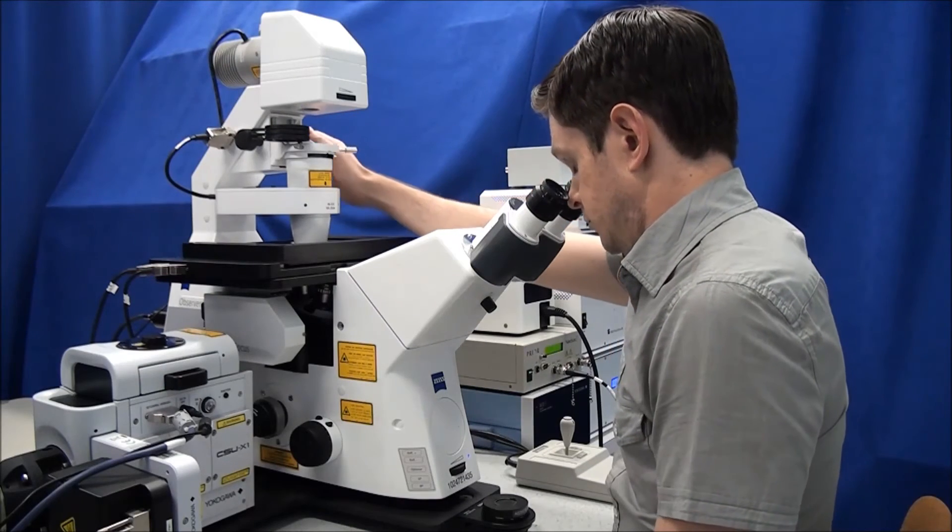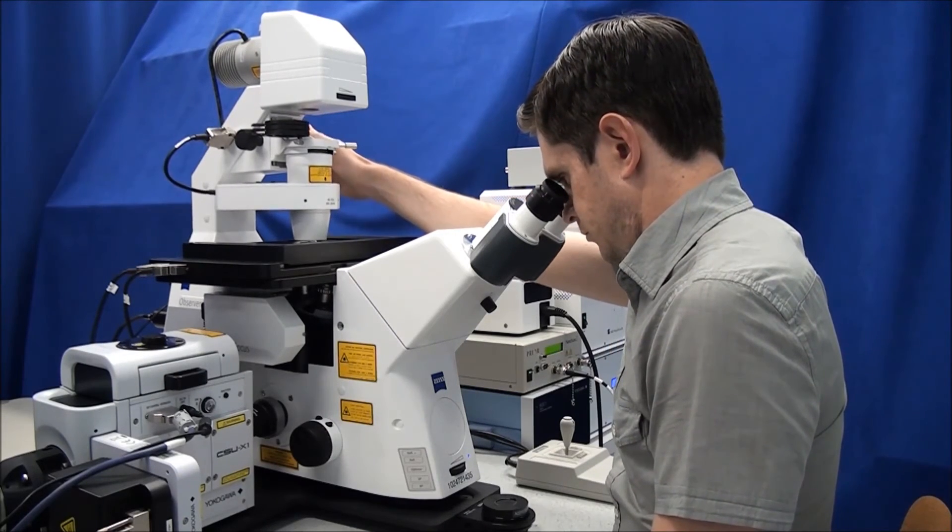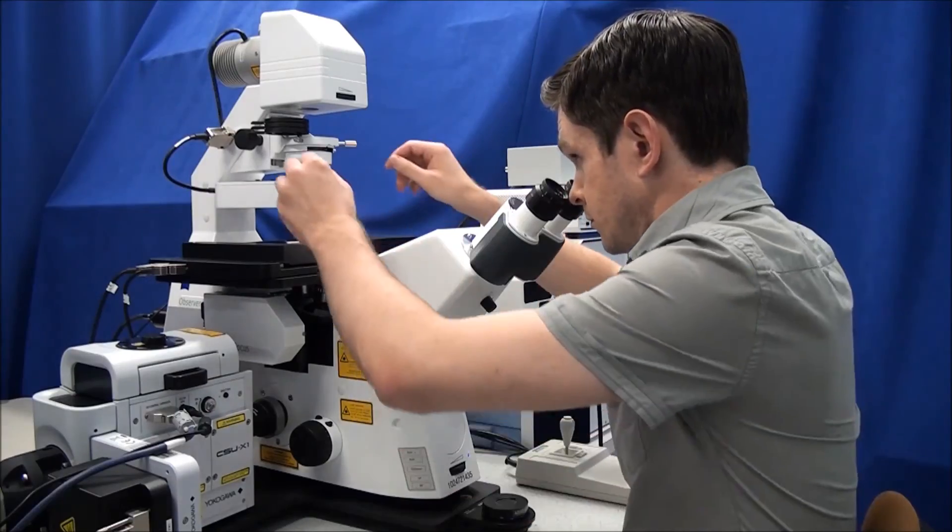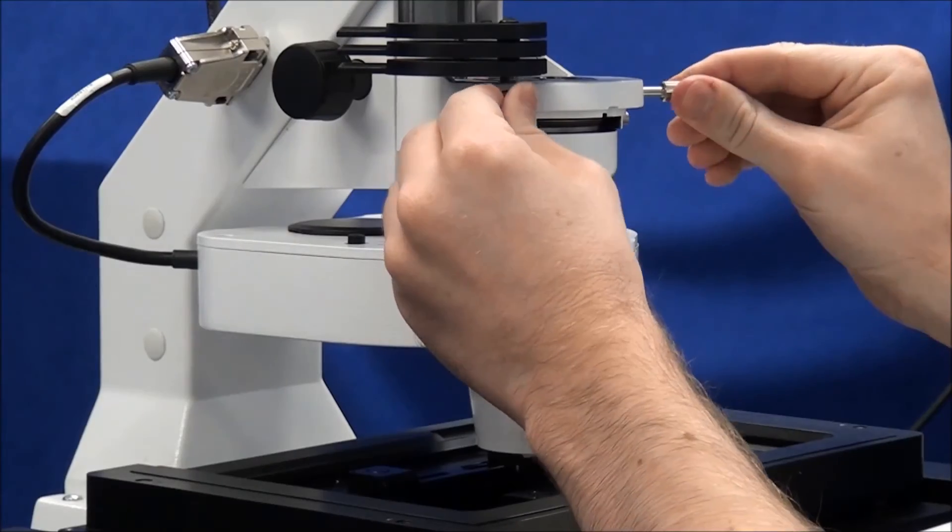Raise the condenser by rotating the condenser focus knobs until the field diaphragm blades come into focus. Center the field diaphragm using the silver centering screws over the condenser.